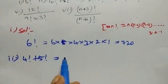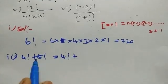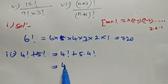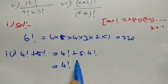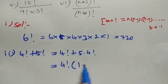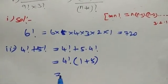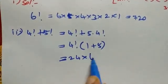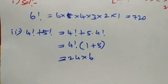4 factorial plus 5 factorial equals 4 factorial plus 5 into 4 factorial. 4 factorial is common, so 4 factorial times 1 plus 5. 4 factorial is 24, 24 into 1 plus 5, 1 plus 5 is 6, which equals 144.